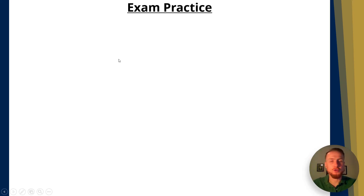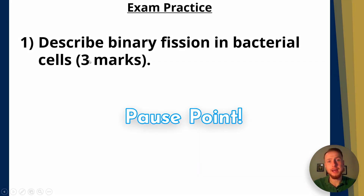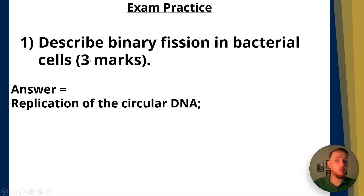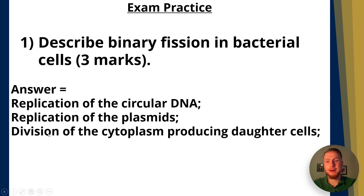Now, let's go through some exam practice. Here's a past paper question: 'Describe binary fission in bacterial cells.' This is worth three marks — pause the video and think about it. The answer is: one mark for replication of the circular DNA; a second mark for replication of the plasmids; and the third mark for division of the cytoplasm producing two daughter cells.